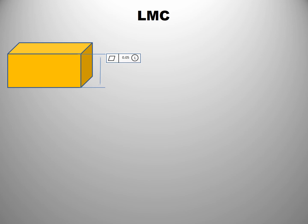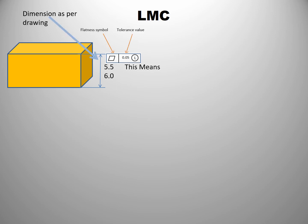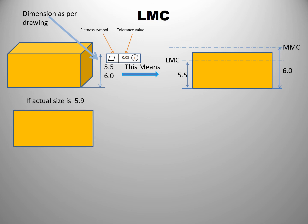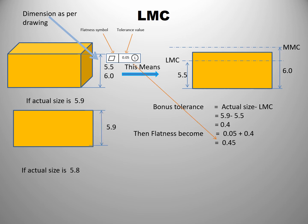Now consider the LMC condition of the component using the same example. The given drawing tolerance is 5.5 to 6, meaning the LMC is 5.5 and the MMC is 6. Suppose the produced part measures 5.9. The bonus tolerance under LMC is actual size minus LMC: 5.9 minus 5.5 equals 0.4. Adding this to the given geometrical tolerance of 0.05 gives a modified geometrical tolerance of 0.45.